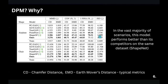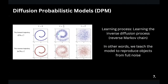A little about DPM itself: each model consists of forward and reverse processes. The forward process for the DPM model is to gradually add noise to a clean image — we start with a clean image, gradually add noise, and end up with a completely random point cloud. The reverse process consists of recreating the original image from pure noise. We teach the model the inverse diffusion process, or equivalently, if we consider the process of adding noise as a Markov chain, we want the model to learn the inverse Markov chain.